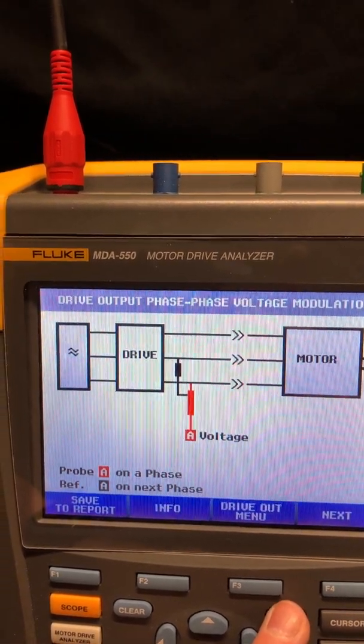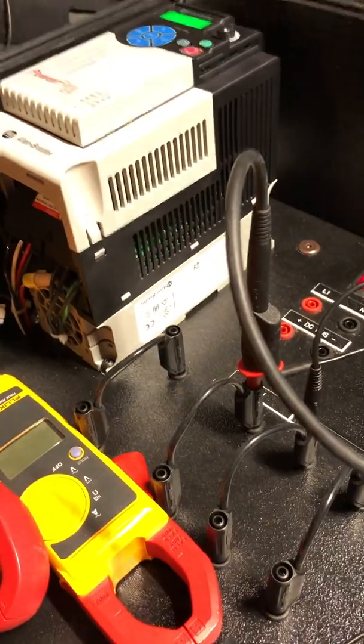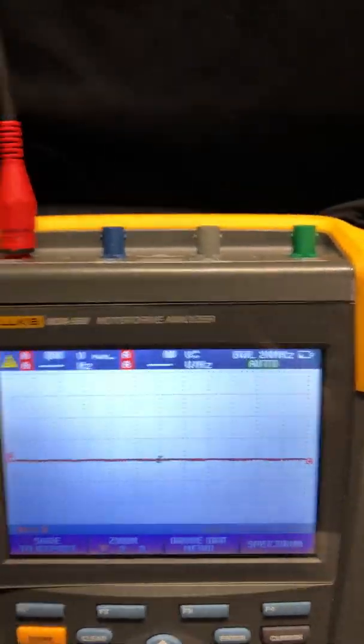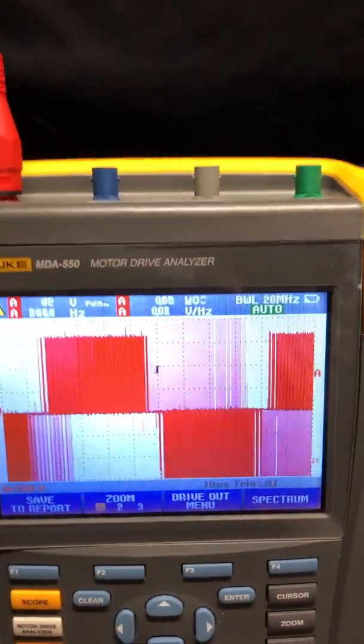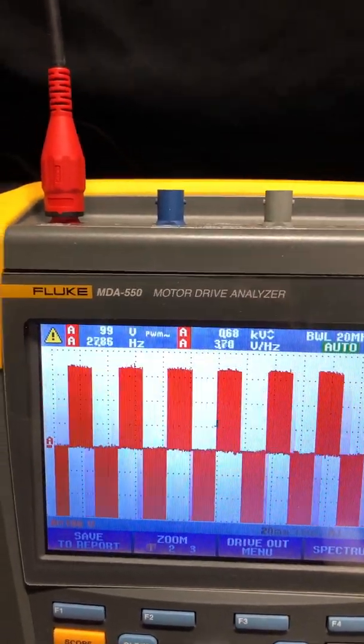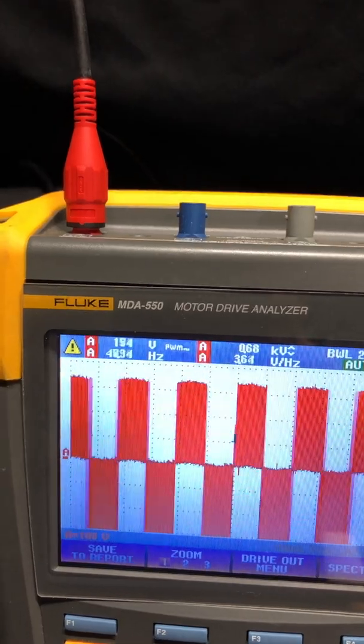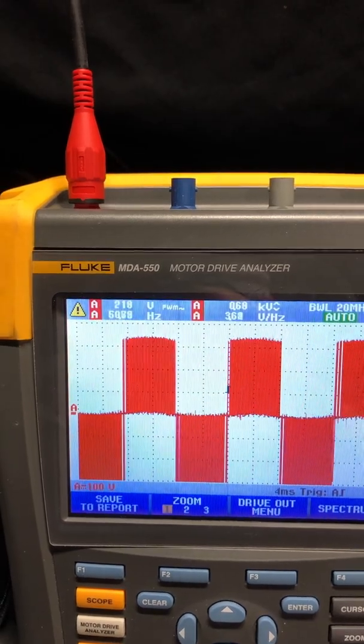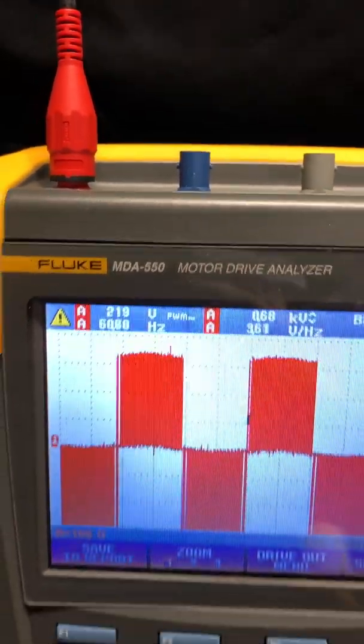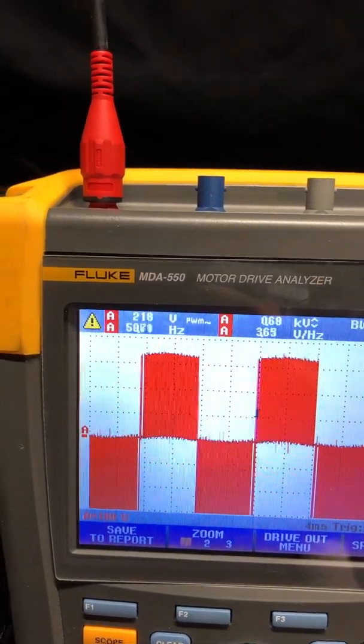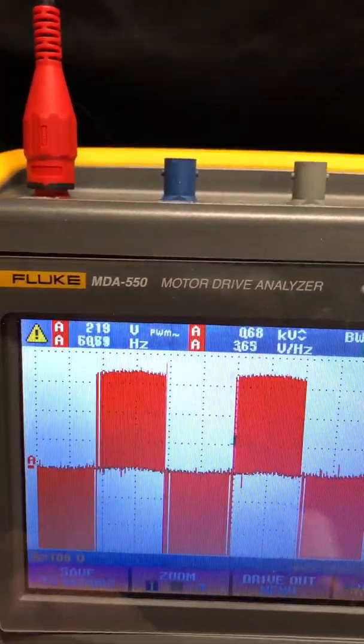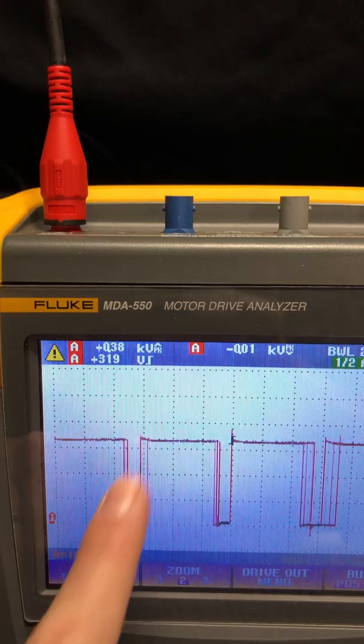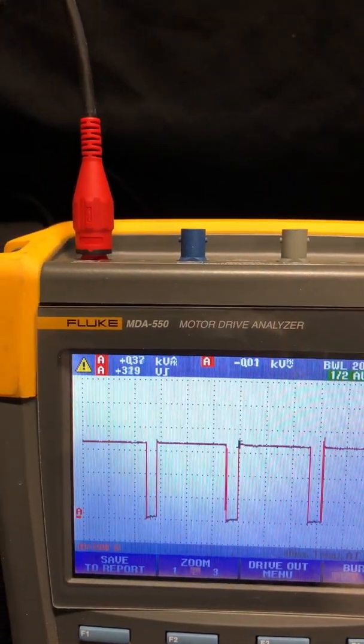Let's go ahead and do phase-to-phase. There's a nice little wiring diagram showing you how to hook it up. I've already made those connections here, phase-to-phase. We'll go ahead and press F4 for next. And let's turn on the drive, see what we see. The neat thing about the MDA 550 is it automatically sets up the test and the scope displaying the readings up top that we need to see. By pressing F2, we can zoom in on this waveform and we can look to see if we have the presence of any voltage spikes. There's a few small ones, but in this case, everything looks okay.